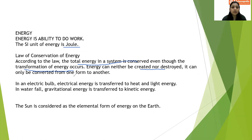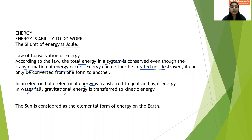An example of this is an electric bulb. Electrical energy is transferred into two forms — heat and light. In an electrical bulb, we see that it is converted into heat and light energy. In case of gravitational energy, gravitational energy is transferred to kinetic energy, as in a waterfall. The ultimate source of energy on earth is the sun, which is considered the elemental form of energy on the earth.